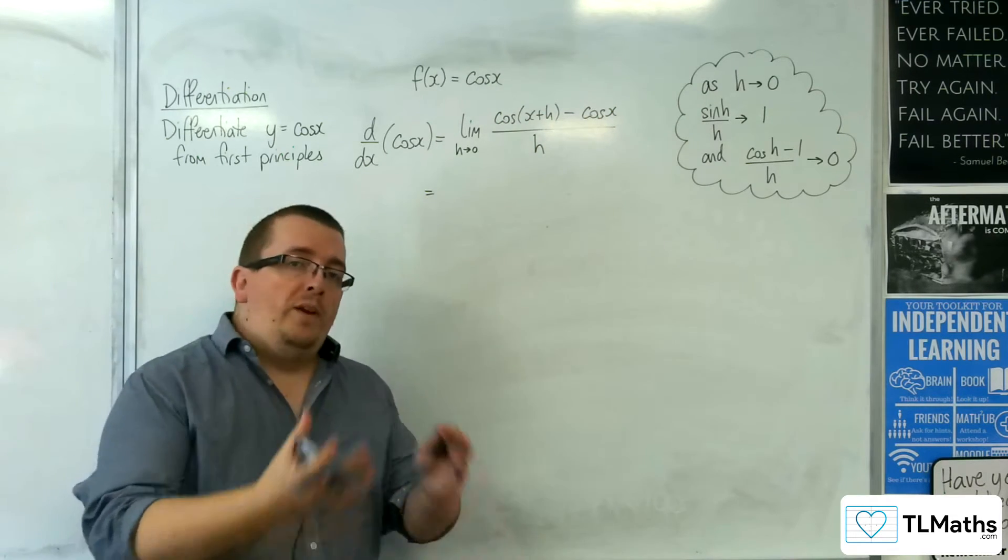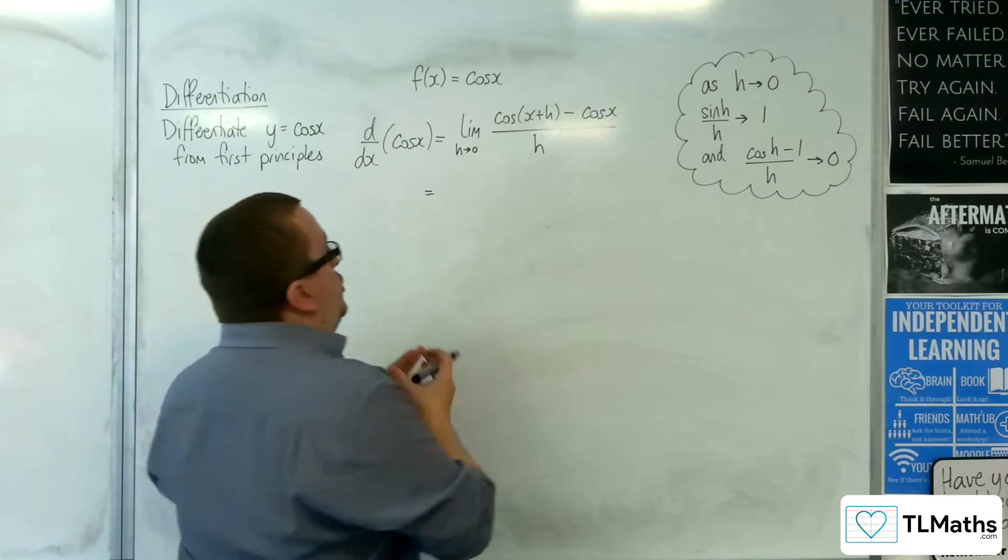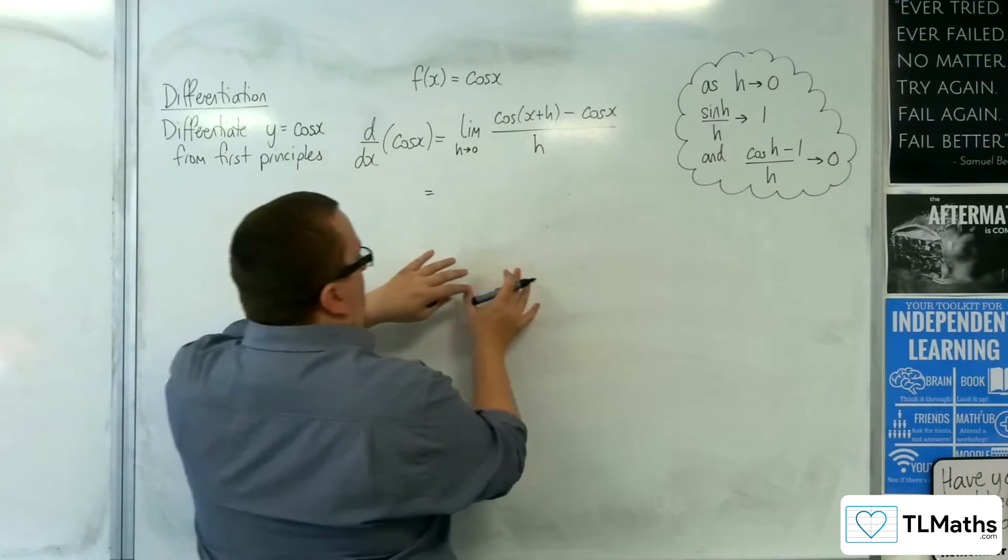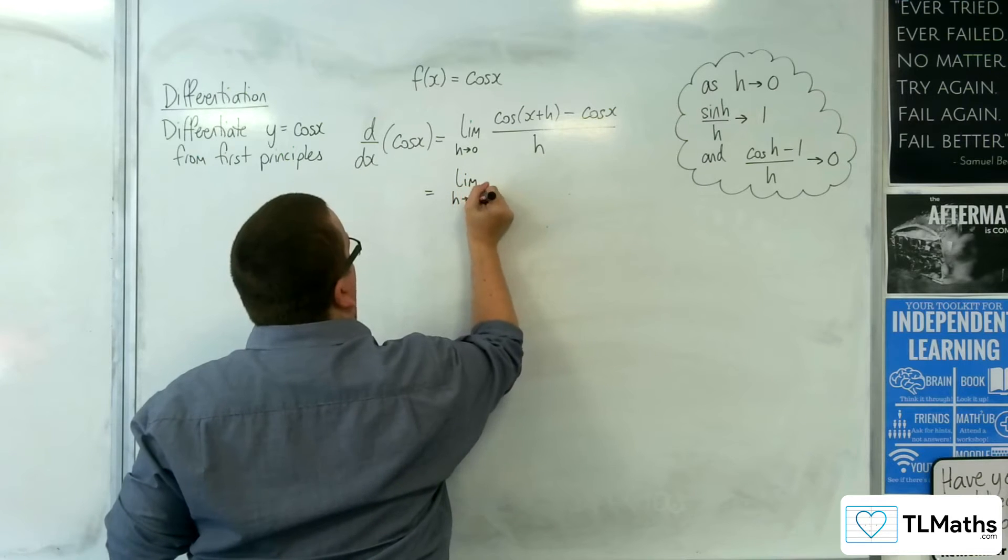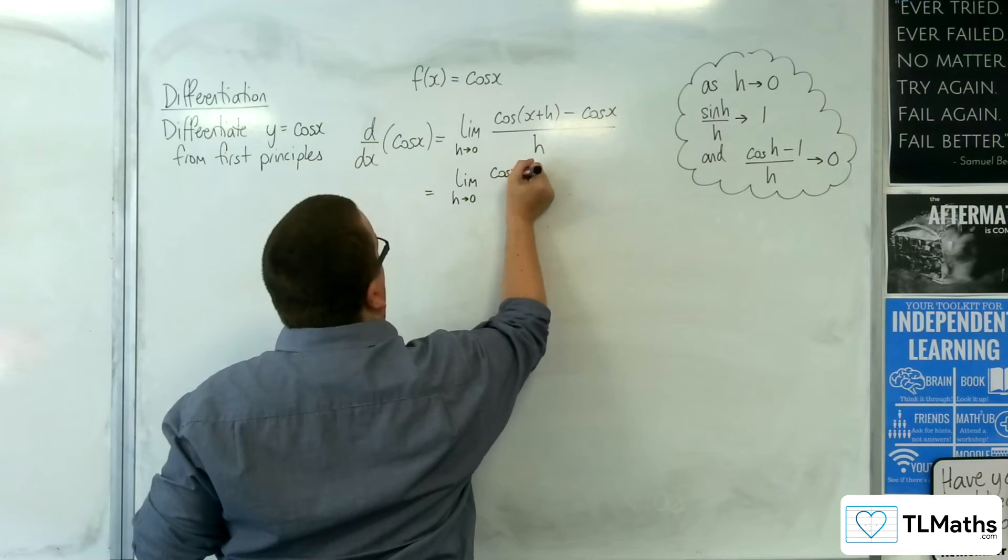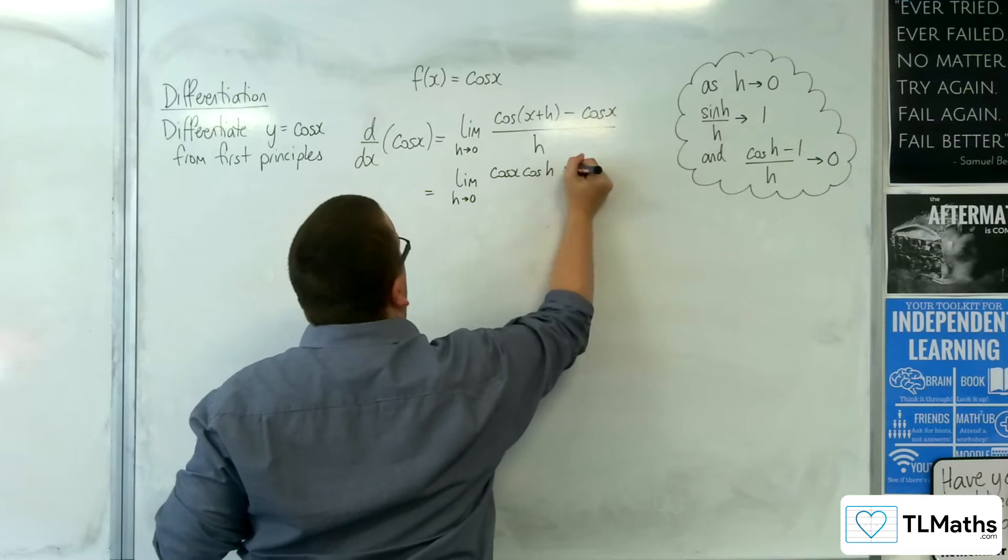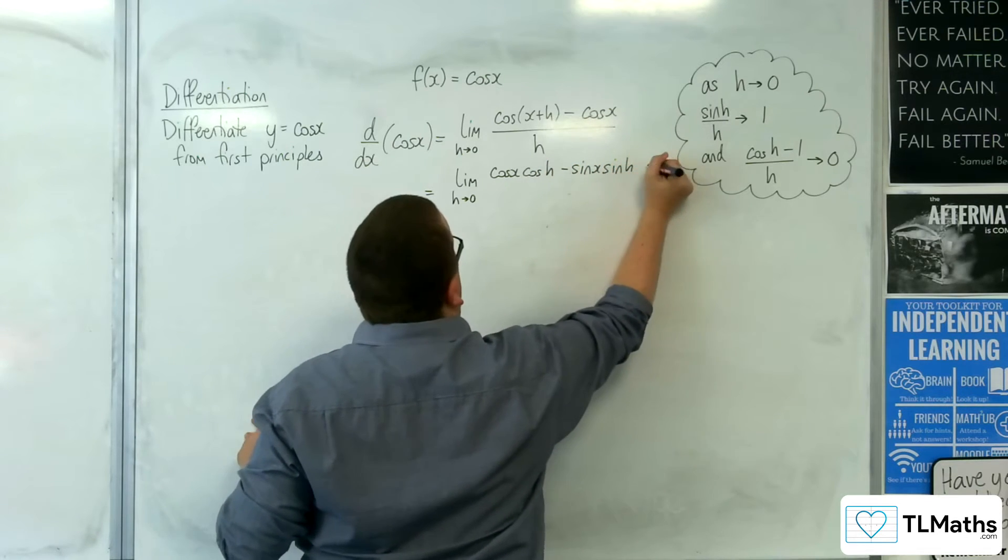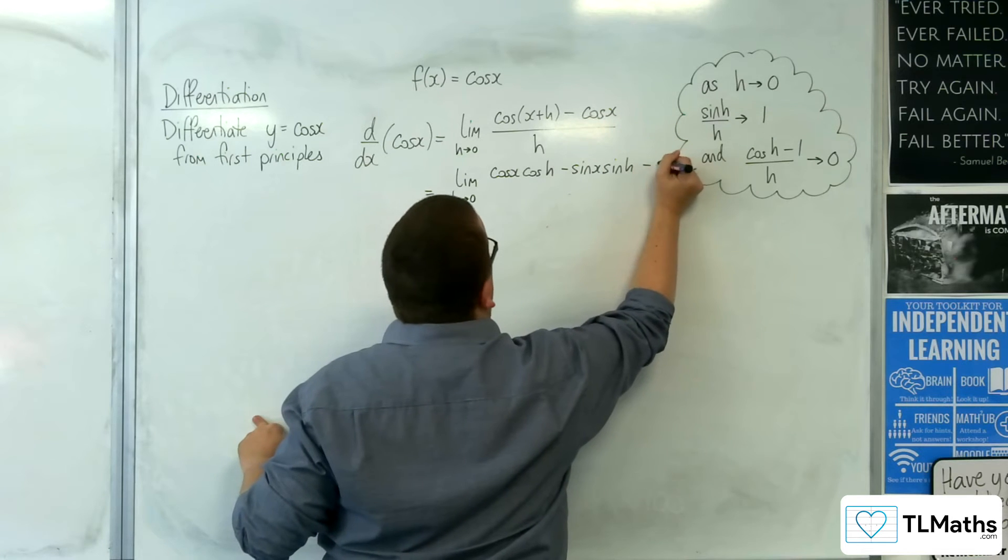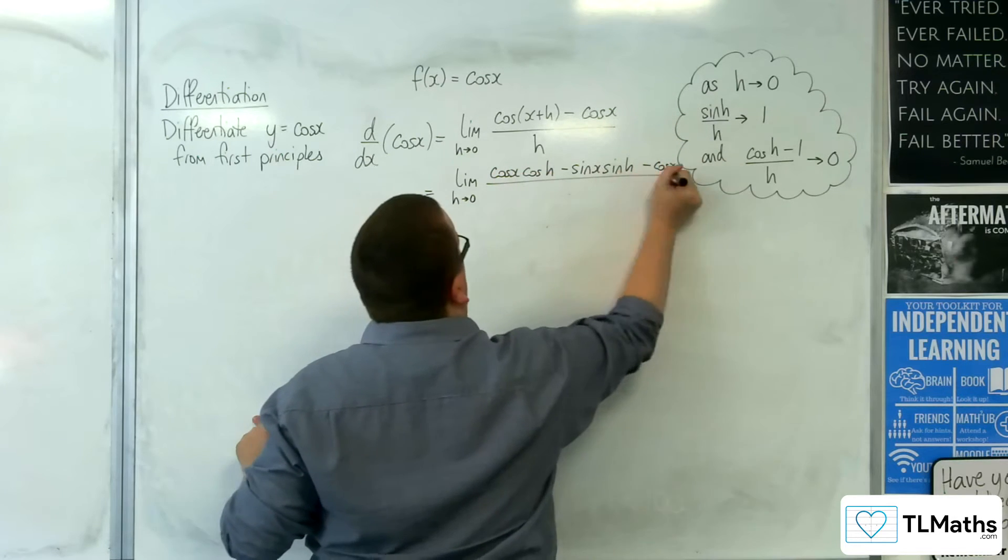So just as before we split up the cosine of x plus h using its compound angle formula. So we can split that apart and say cosine x cosine of h, take away sine x sine h, and we've got to take away the cosine x on the end as well, all over h.